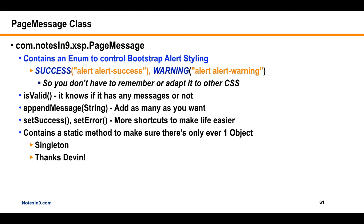Inside the PageMessage class we're going to have an enum. An enum is kind of like a combo box for programmers — it's a Java thing, not in JavaScript as far as I know. If you use an enum to hold values like success, warning, or danger, and you misspell one in your Java code, it'll let you know. It's better than typing a string in double quotes and hoping you get the spelling right every time.